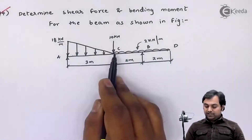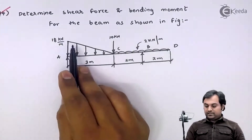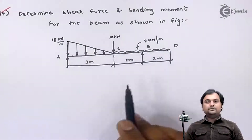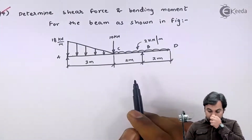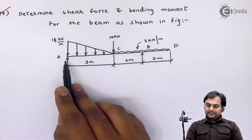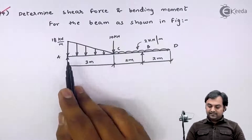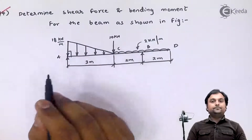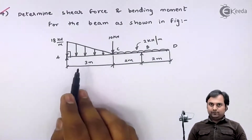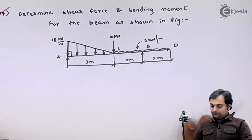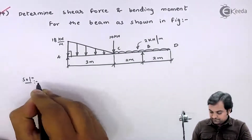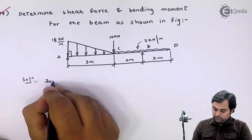As we can see in this question, from A to C we have a loading called uniformly varying load (UVL), and from C to D we have uniformly distributed load (UDL). Whenever we have a uniformly varying load, we treat it like a right-angle triangle and convert the intensity into the value of load. In the solution, I will first address the UVL.